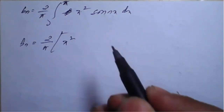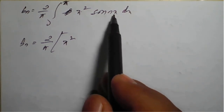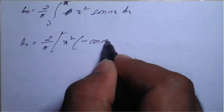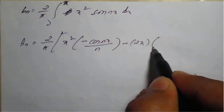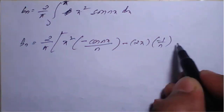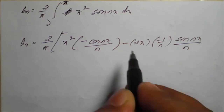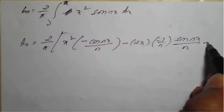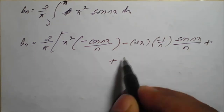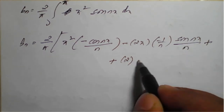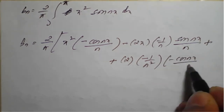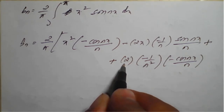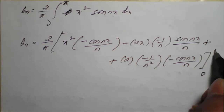Applying Bernoulli's rule, b_n = (2/pi) times: keep x² as is, and integrate sine(nx) to get minus cos(nx)/n. Then differentiate x² to get 2x, carry 1/n, and integrate cos(nx) to get sine(nx)/n. Next, differentiate 2x to get 2, and carry minus 1/n², then integrate sine(nx) again to get minus cos(nx)/n. The bracket is closed with limits 0 to pi.